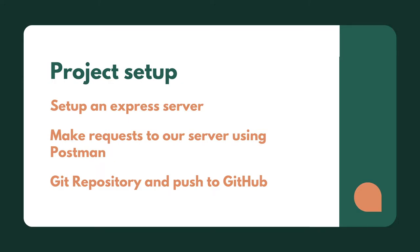Hi guys, welcome back to the course. In this lesson, we're going to have a look at the project setup. We're going to set up an Express server, make requests to that server using Postman, and also look at initializing Git and a GitHub repository that we're going to push to GitHub.